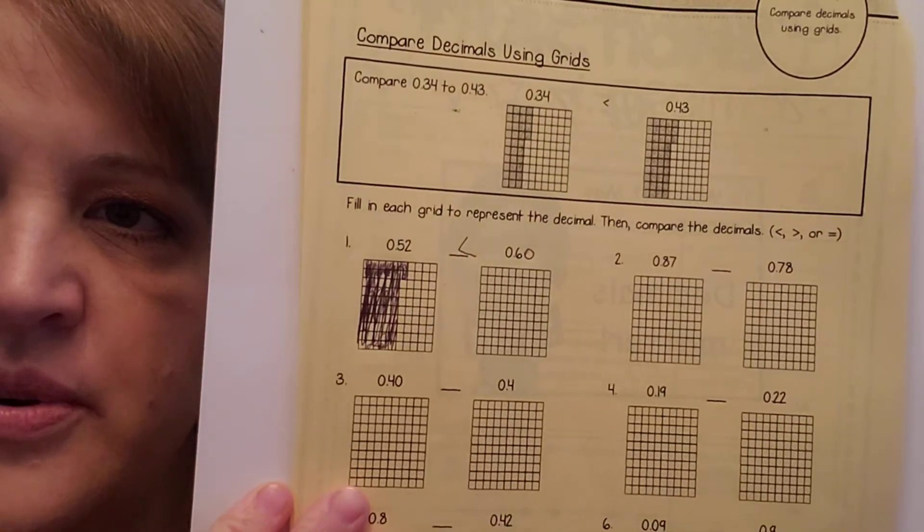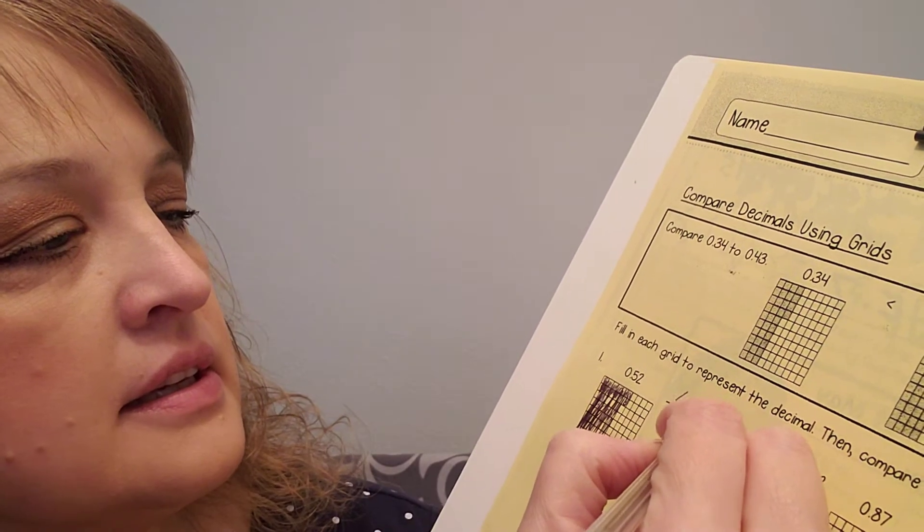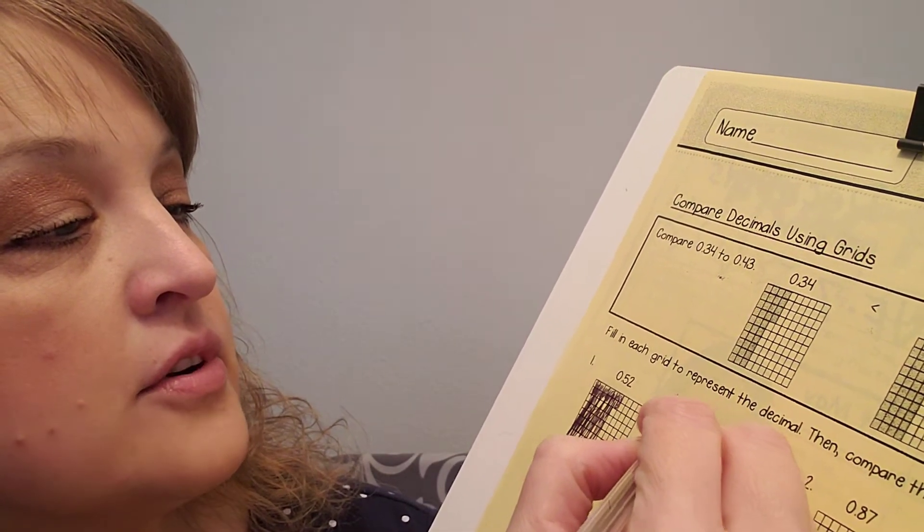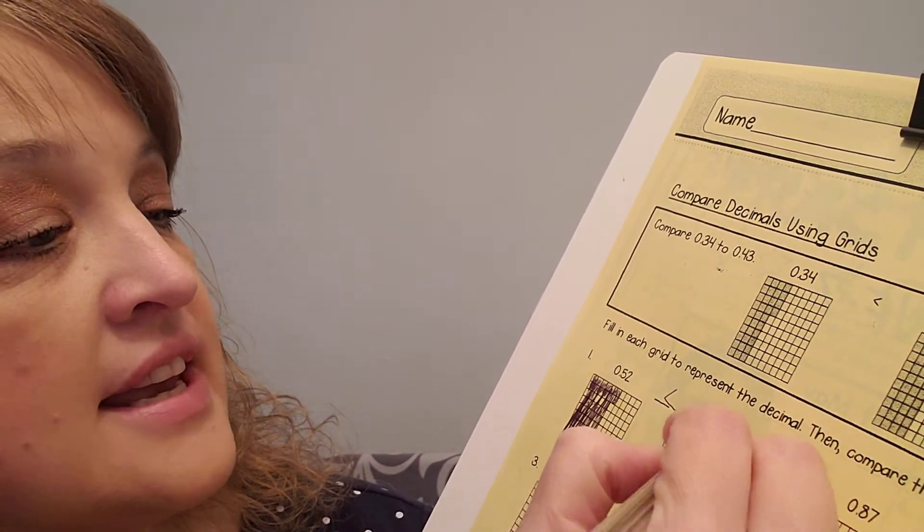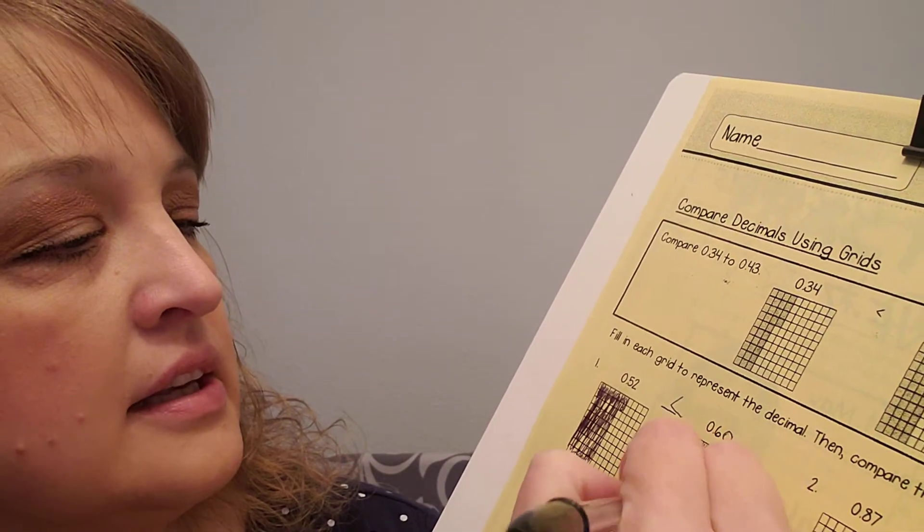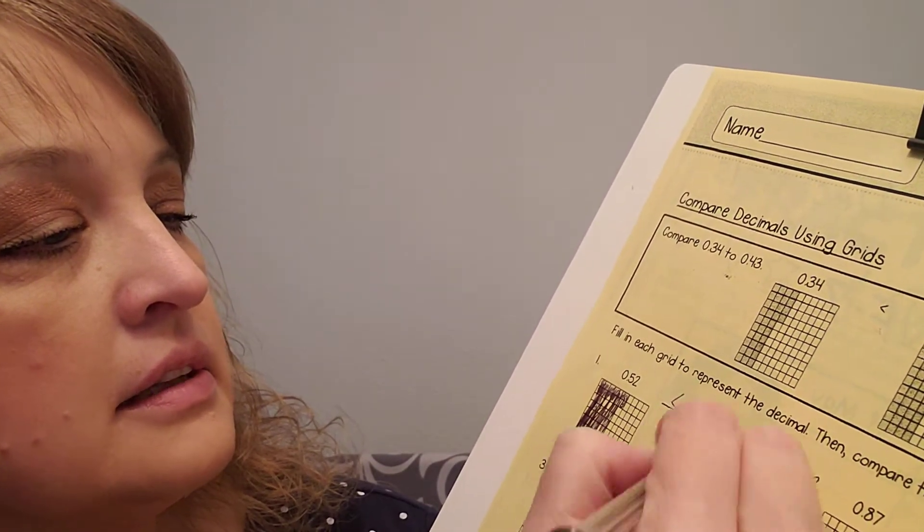So, I've got fifty-two hundredths there, and then I'm going to color in sixty-hundredths, which is the same as six-tenths. I'm going to color that in here.